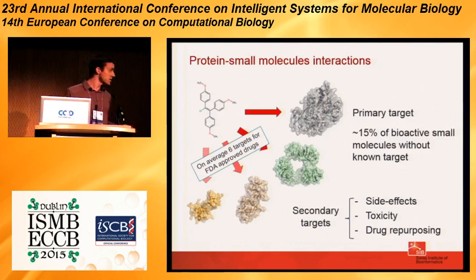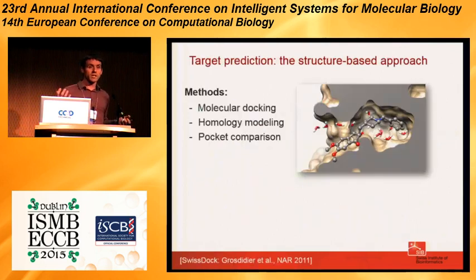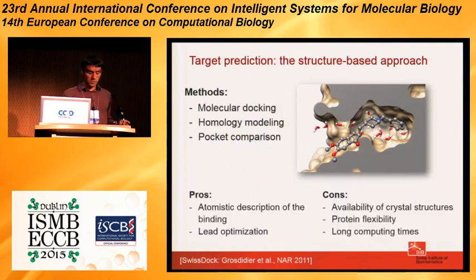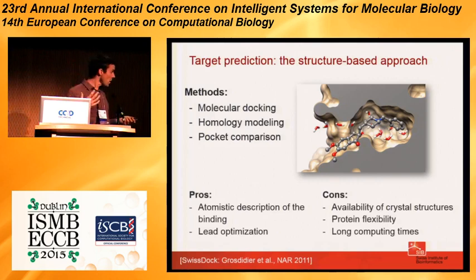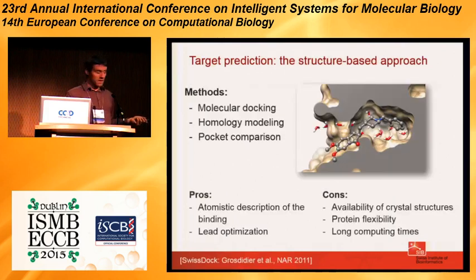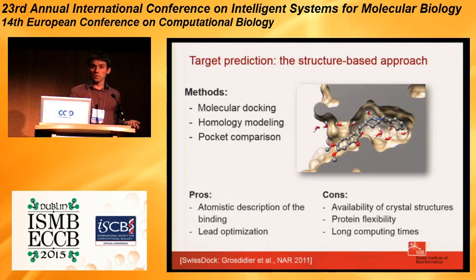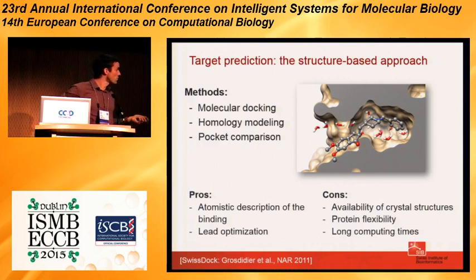It is not so easy to detect all targets for small molecules experimentally because you need to screen many different proteins, and therefore there is a need for computational approaches. Historically, many people used protein structure to see whether a small molecule could fit in binding pockets using docking, pocket comparison, or similar algorithms. This is very powerful in some cases because you get an atomistic description of the interaction. However, it has limitations: you need a crystal structure, which is not always available, the calculations can be complex given the flexibility of structures, it is not a solved problem, and it is fairly long to compute.